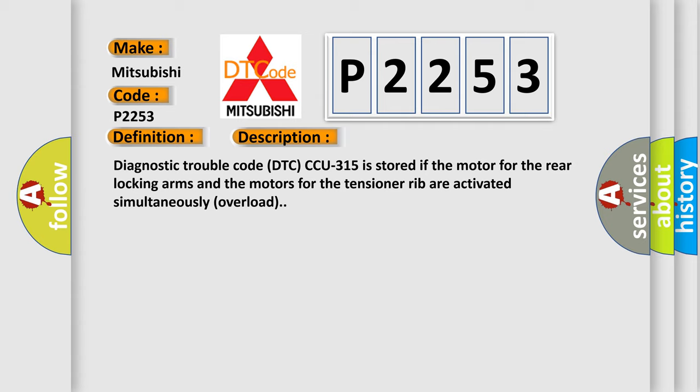Diagnostic trouble code DTC CCU315 is stored if the motor for the rear locking arms and the motors for the tensioner rib are activated simultaneously overload.